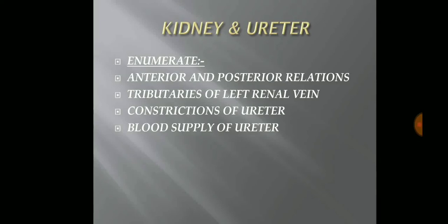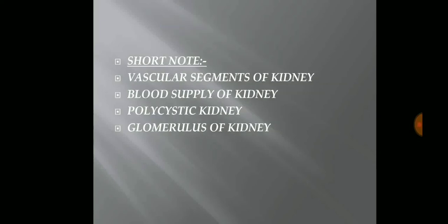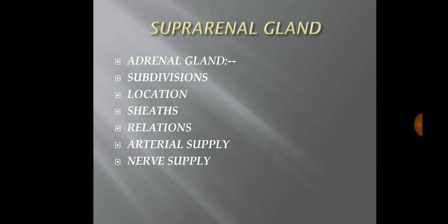Moving to the kidney and the ureter. The enumerate questions from this part are: anterior and posterior relations — this is the most important one — tributaries of the left renal vein, which is less important, constrictions of the ureter — which is also important — and blood supply of the ureter, which is lesser important. Short notes on: vascular segments of the kidney and blood supply of the kidney are lesser important. Polycystic kidney is most important, and glomerulus of the kidney is also less important.